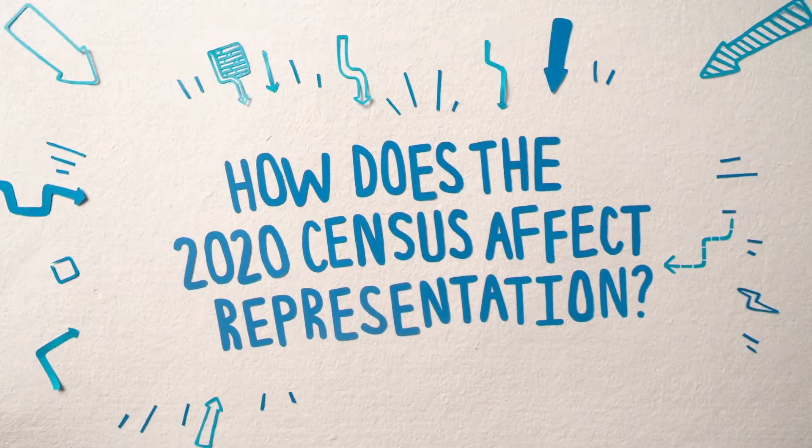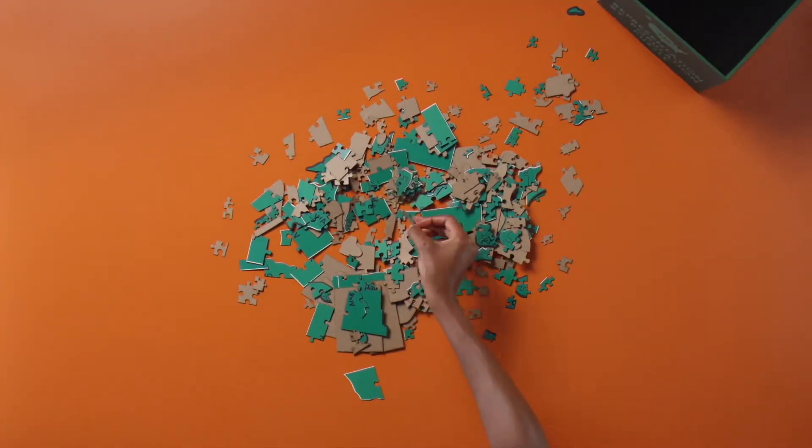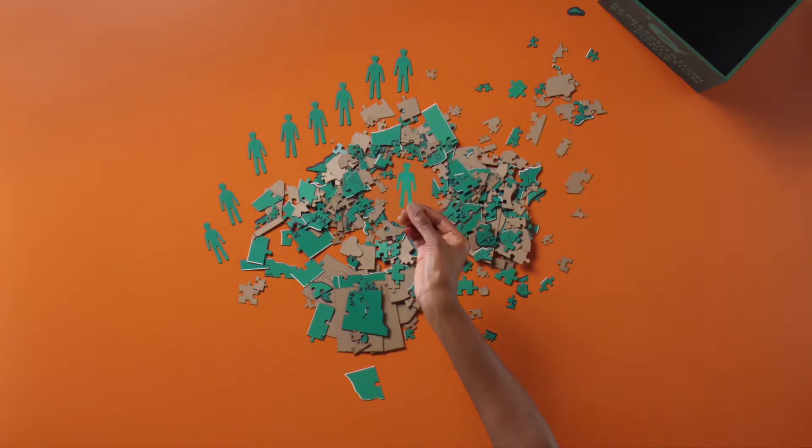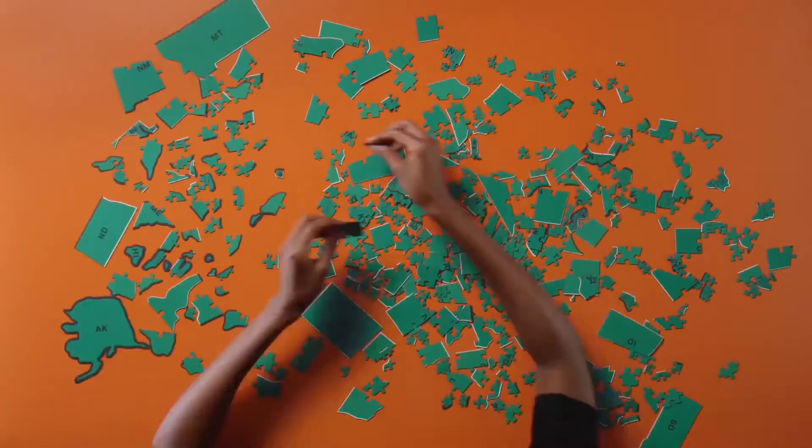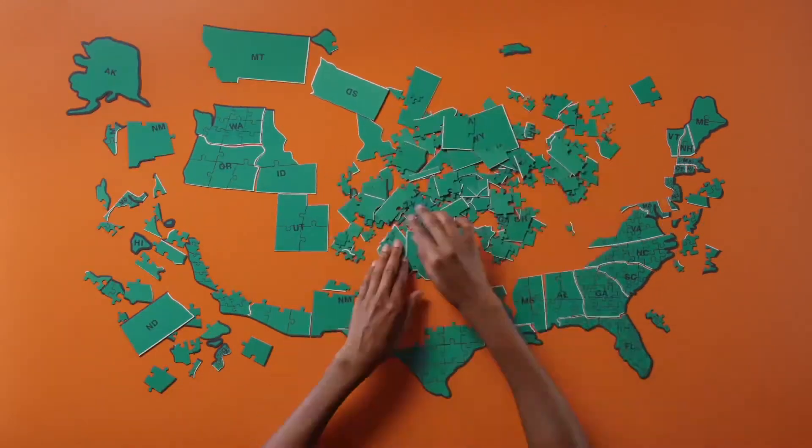How does the 2020 Census affect representation? There are 435 seats in the House of Representatives. These get distributed to the 50 states by population, and an accurate Census response helps your state get the right amount of seats.